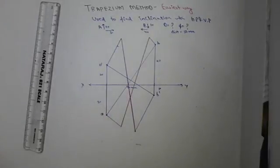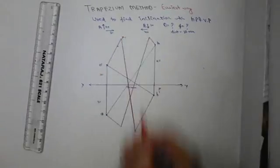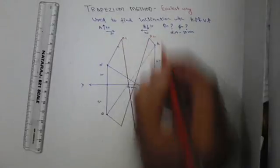And now mark these as A1, B1, and A2, B2.